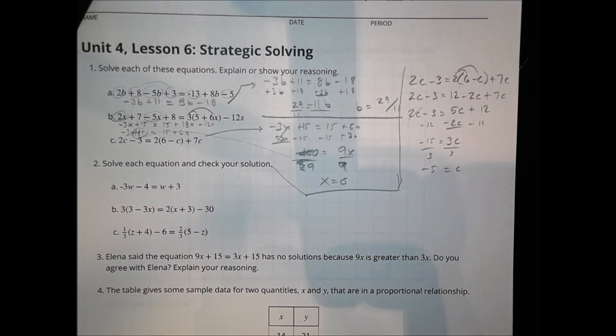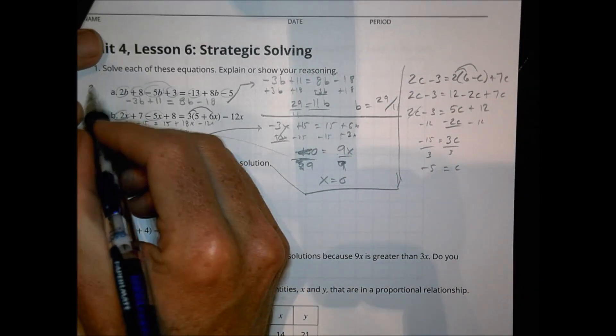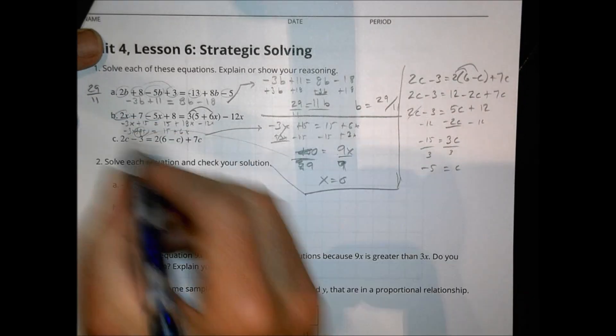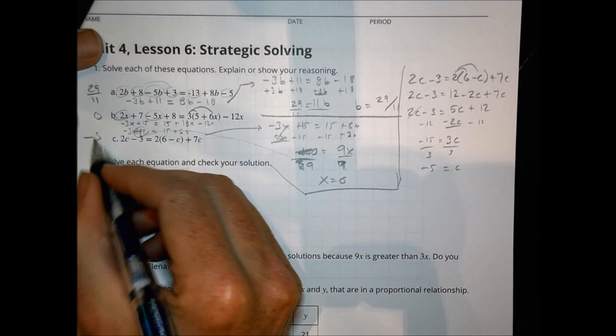All right, so that's it. We had 29 over 11. We had 0. And we have negative 5 for our answers.